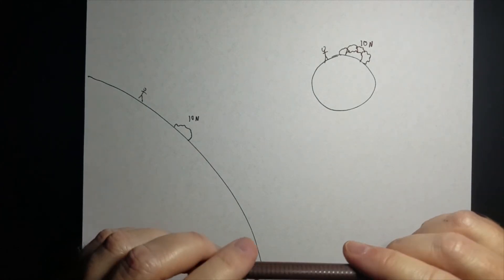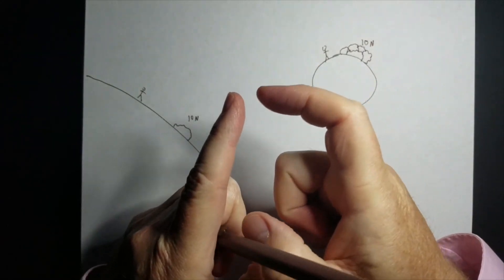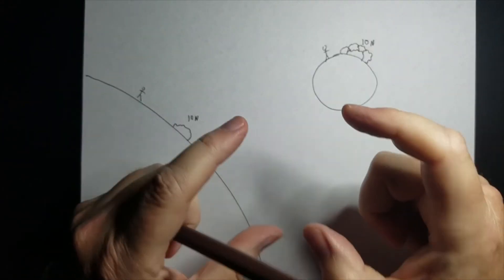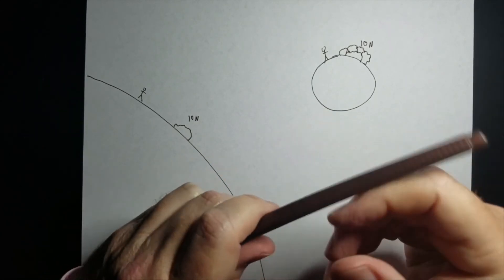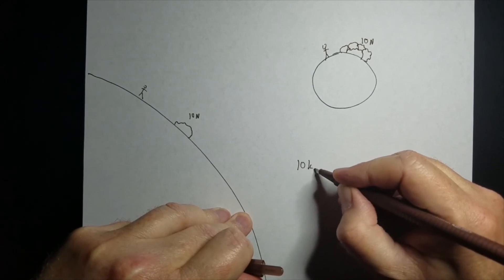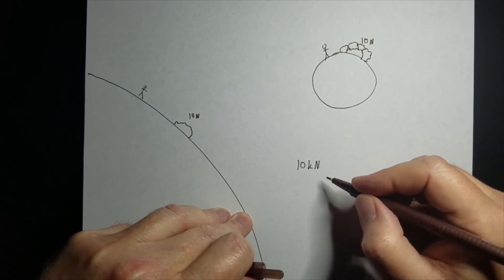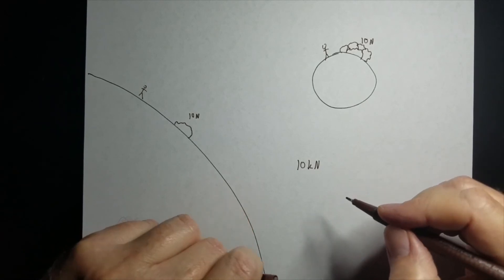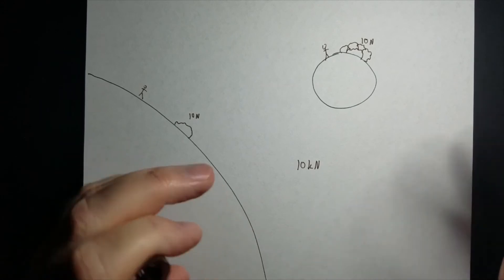If you've ever done any rock climbing, where they take those little C-clamps, those little carabiners and stuff, and clamp them on, if you ever look at a real one, it has something like 10 KN. It says something like this on its side. 10 KN. That stands for 10,000 newtons. That's how much weight in newtons that that can hold before it might break and you plummet to your death.